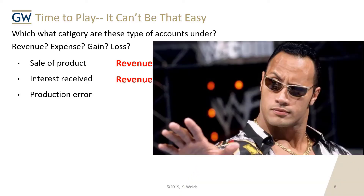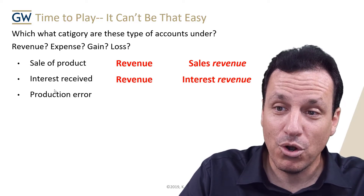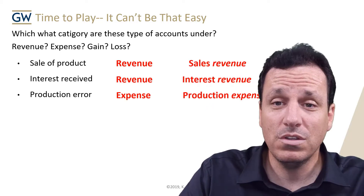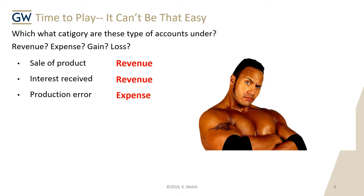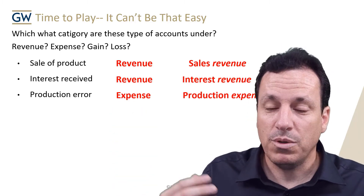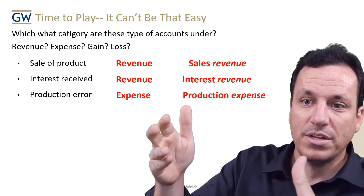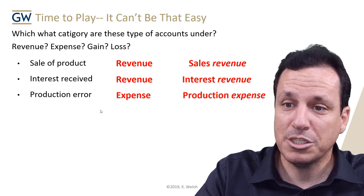In front of millions of The Rock's fans, I'm going to own the rest of these. Production error — so if you have a production error, what is that? A revenue or an expense? An expense. It's part of production and it's an error. When you have a production error, this is a normal process of production, and so it's usually considered an expense.